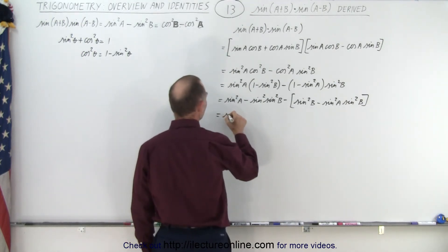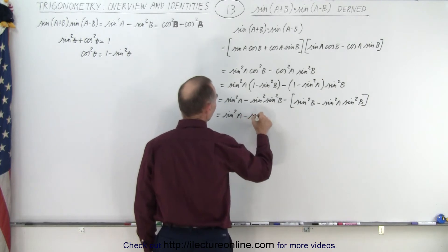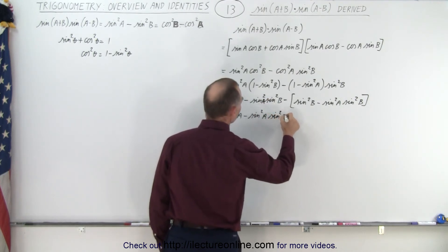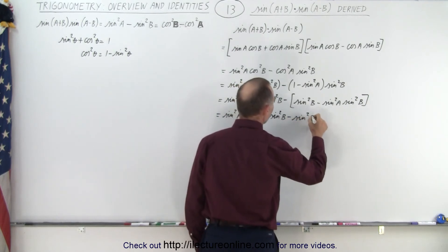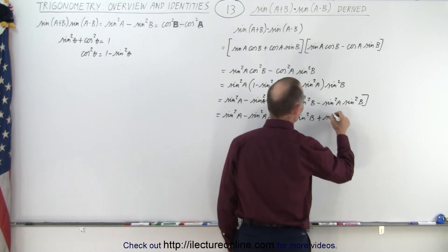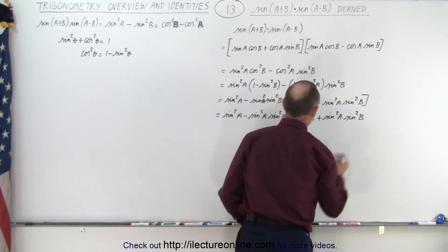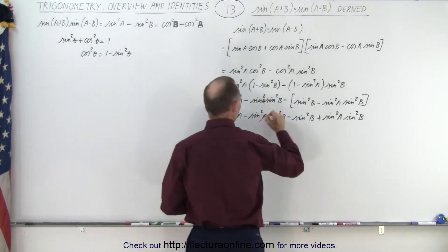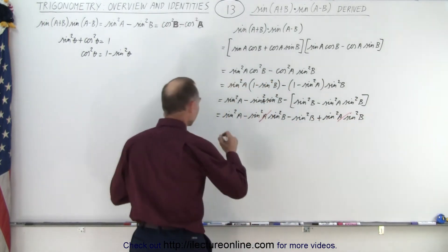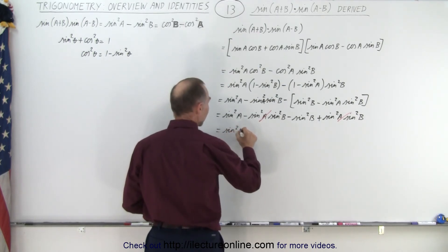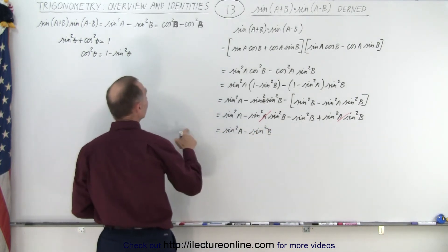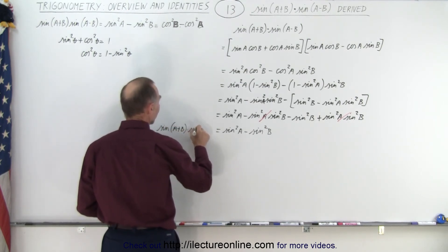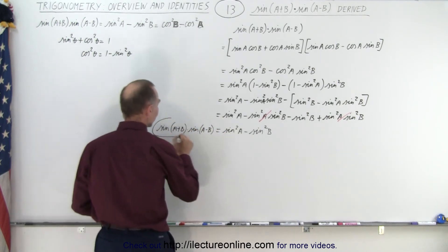Applying the negative signs, we get: sine squared(A) minus sine squared(A)·sine squared(B), minus sine squared(B), plus sine squared(A)·sine squared(B). The minus sine squared(A)·sine squared(B) and the plus sine squared(A)·sine squared(B) cancel out, leaving simply sine squared(A) minus sine squared(B). That equals sine(A+B) times sine(A−B), which is the first identity we were looking for.